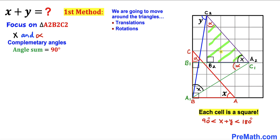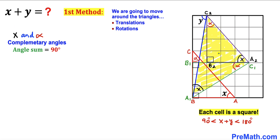Let's focus on triangle A2B2C2, which we obtained by rotating the green triangle. After the translation, this angle has become angle x, this is our 90-degree angle, this is angle alpha, and the side lengths remain 3 units and 4 units.